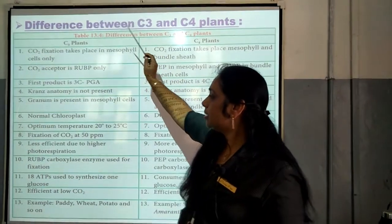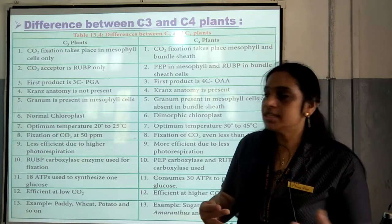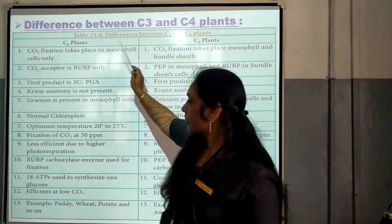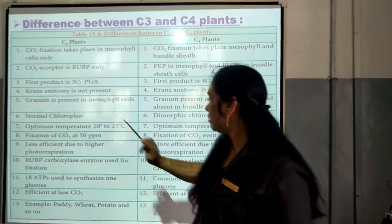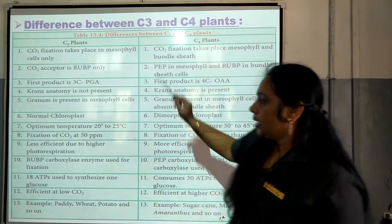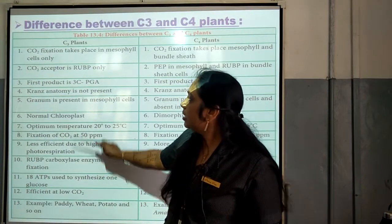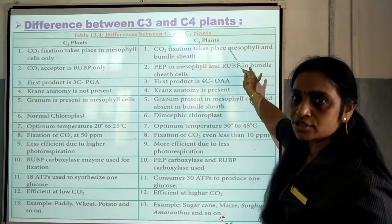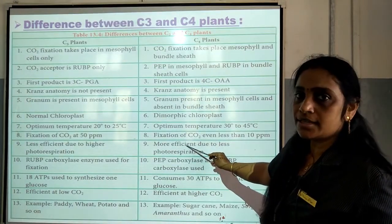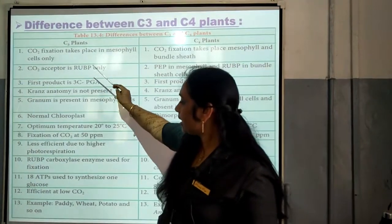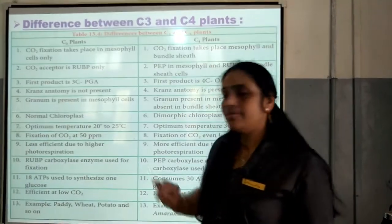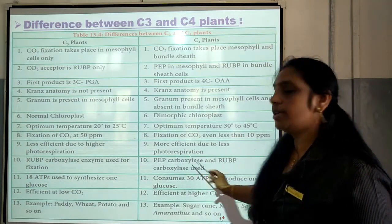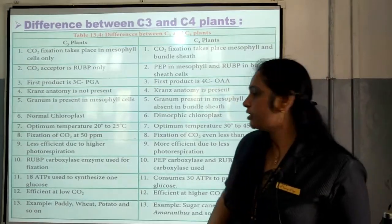The optimum temperature needed for C3 plant to go through the C3 cycle is 20 to 25 degrees Celsius. For C4 plants, it is 30 to 45 degrees Celsius. For C3, fixation of CO2 takes place at 50 parts per million; for C4, even less than 10 parts per million. C3 is less efficient due to high photorespiration. In C3 plants, photorespiration is also taking place, so this cycle is less efficient. In the case of C4 plants, it is more efficient due to less photorespiration. In C3, RuBisCO enzyme is used for the fixation of carbon dioxide. In C4, PEP carboxylase and RuBisCO — that is, two enzymes — are included for the fixation of carbon dioxide.